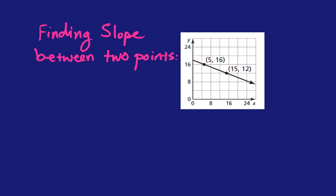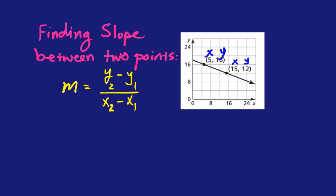The first way is to use the slope formula. The slope formula is: m, which represents slope, equals y2 minus y1 divided by x2 minus x1. We call these our coordinate points x and y. The first point is x1 and y1, and the second point is x2 and y2. It doesn't really matter which one you call what.